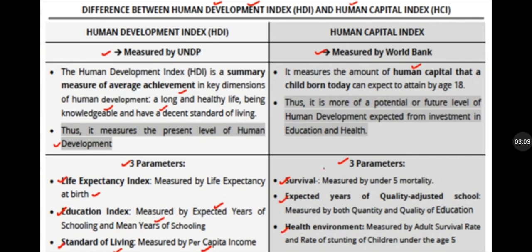The HCI — Human Capital Index — measures the amount of human capital that a child born today can expect to attain by the age of 18. It calculates what a child can acquire in terms of health and education. Thus it measures the potential or future level of human development expected from investment in education and health.